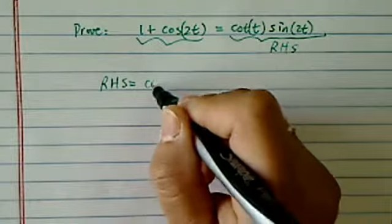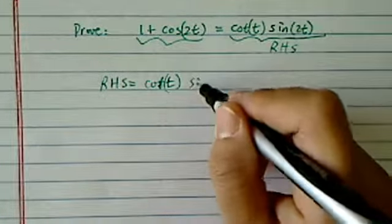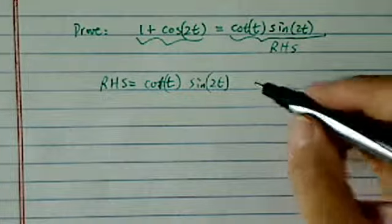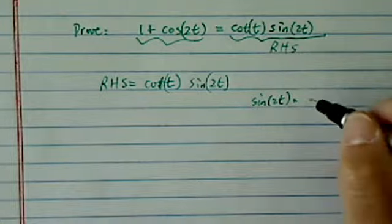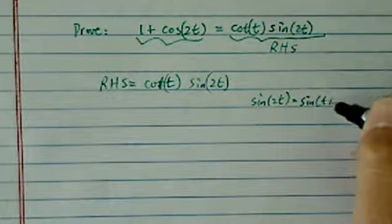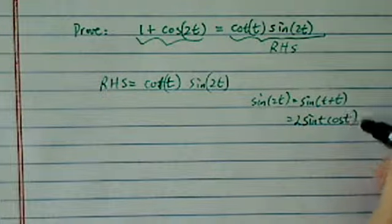Right-hand side is equal to cotangent of t, sine of 2t. Now I happen to know or memorize the sine of 2t. If you don't know this one, it's no big deal. It's really just sine of t plus t. This turned out to be twice of sine of t cosine of t.